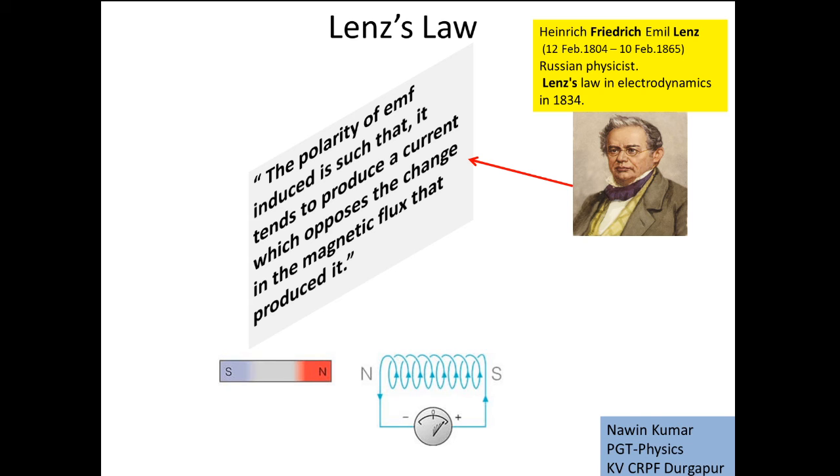The polarity of EMF induced is such that it tends to produce a current which opposes the change in the magnetic flux that produced it. It is the statement of Lenz's law. Here you can see a diagram is taken. North pole is close to this coil. If this magnet moves towards this coil, then it will oppose, doesn't allow the north pole to come.